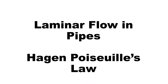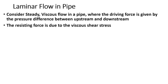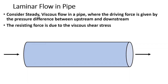We consider a pipe section where flow takes place along the axial direction. We assume the flow is viscous — the effect of viscosity is not ignored. Since the pipe is horizontal, we only consider pressure force as the driving force. We ignore gravity force and also ignore compressibility or elastic force. The resisting force is due to viscous shear stress.